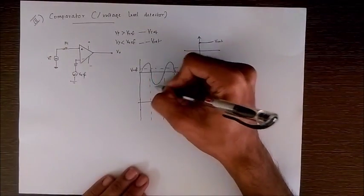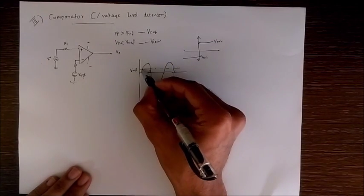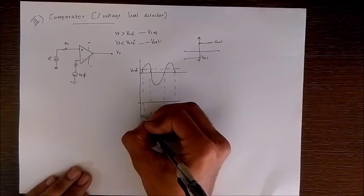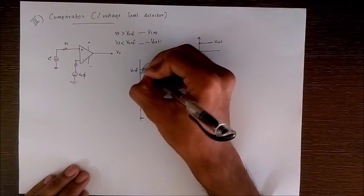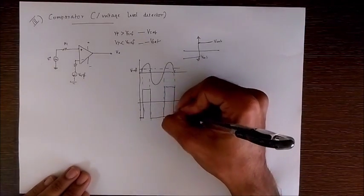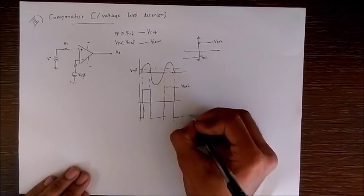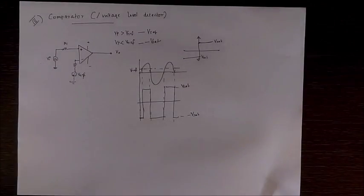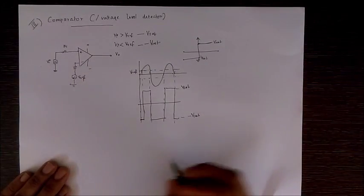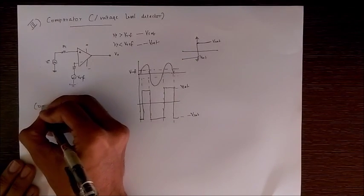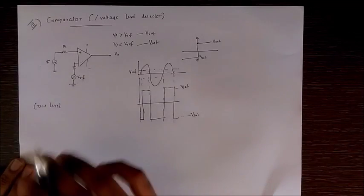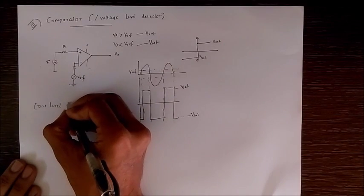If the input signal is time-varying and the reference voltage is Vref: when the voltage is less than Vref we get -Vsat, and the instant it goes above Vref we get +Vsat. The output waveform has maximum value +Vsat and minimum value -Vsat. A special case is when Vref = 0, which gives us a zero-level crossing detector: all positive input voltages produce +Vsat and all negative voltages produce -Vsat.